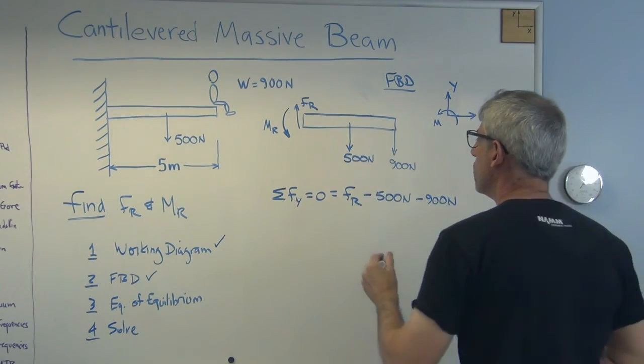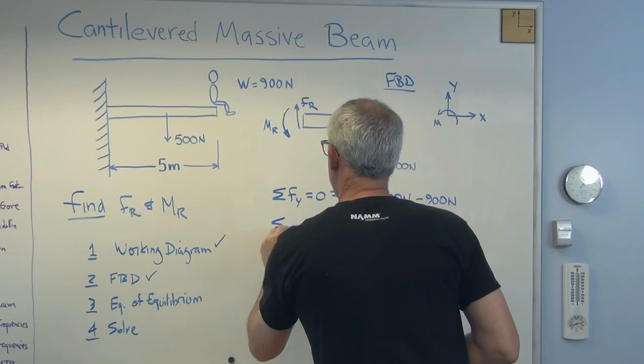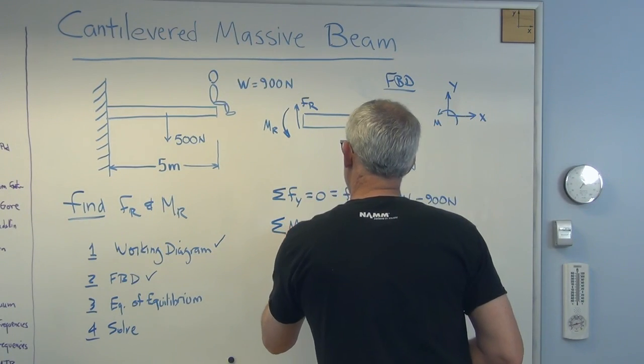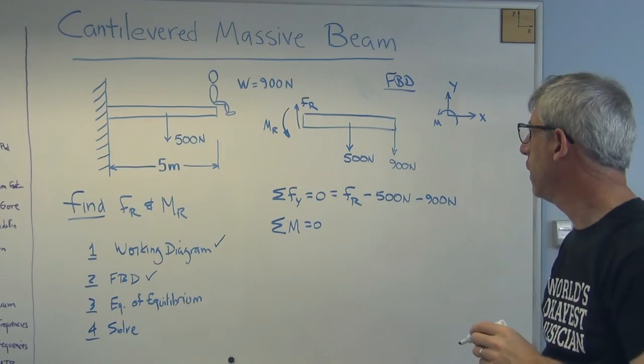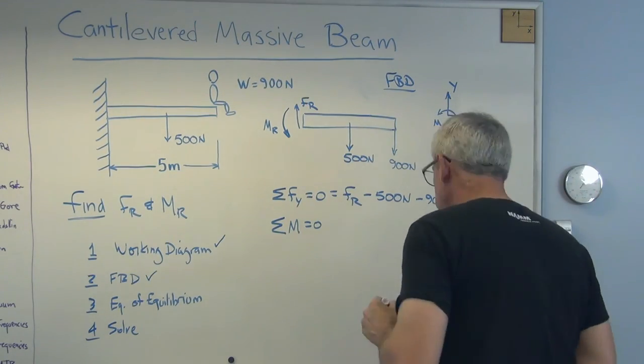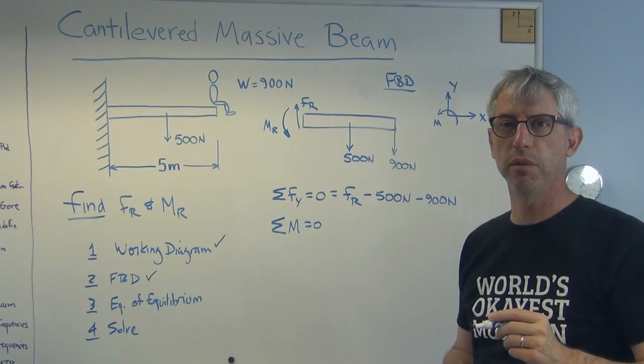There's no forces in the x direction. So for sum of the forces in the y direction, I'll just work from left to right here. There's the reaction force. I made that go up. And since up is positive, that's positive, minus 500 newtons minus 900 newtons as I go from left to right. That looks good.